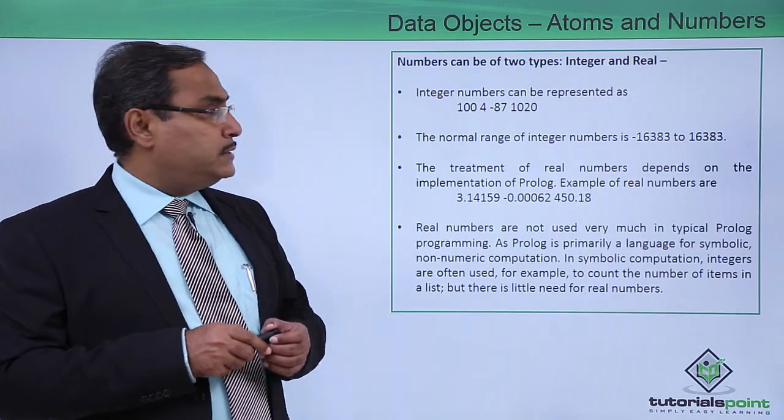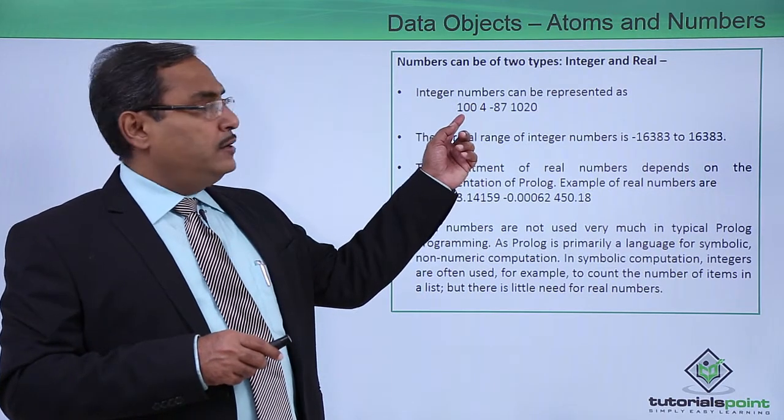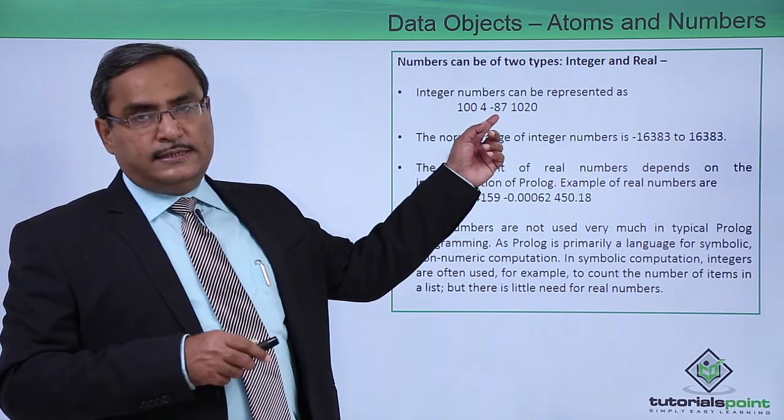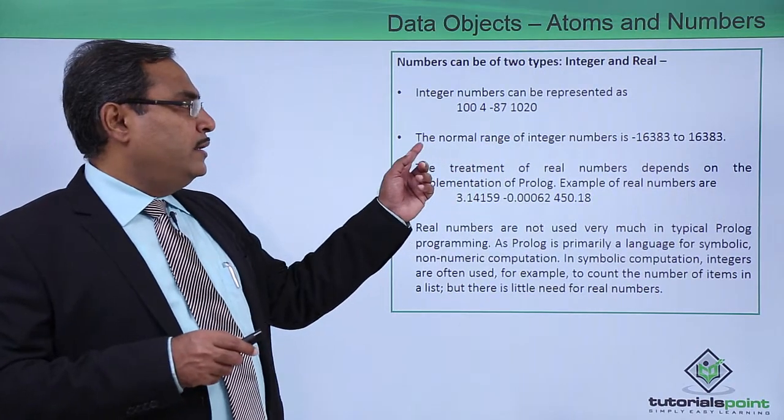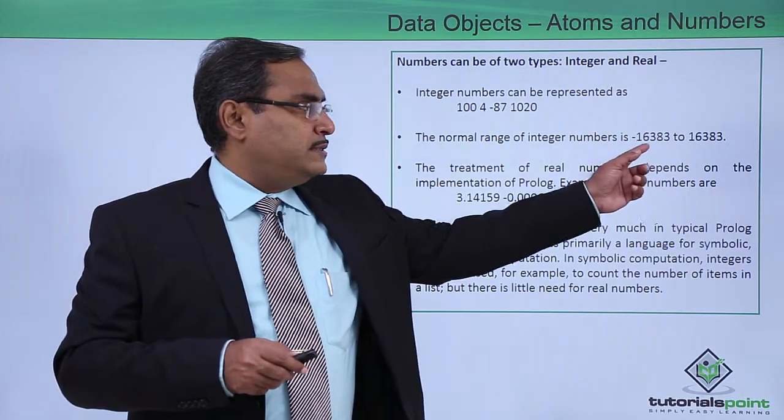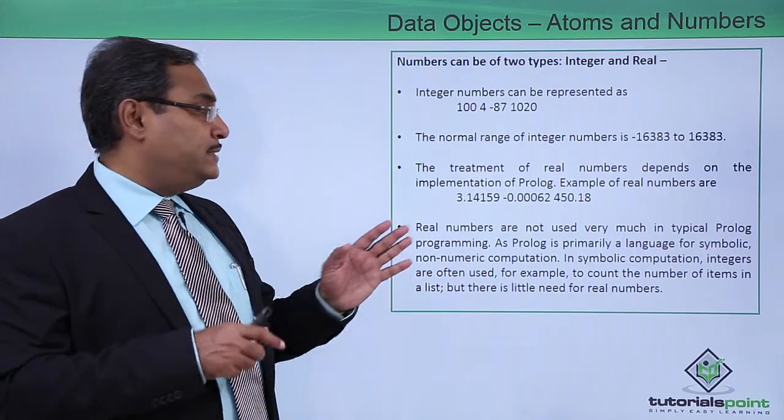Now let us go for the numbers. Integer numbers can be represented as 100, 4, minus 87, 1020. The normal range of integer numbers will be this—this is the normal range in which we can express our integer numbers.